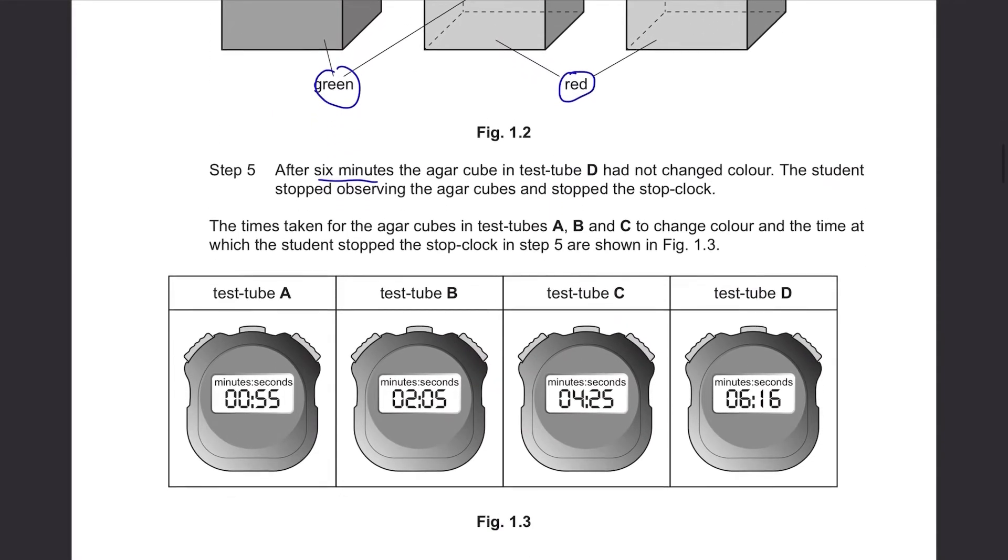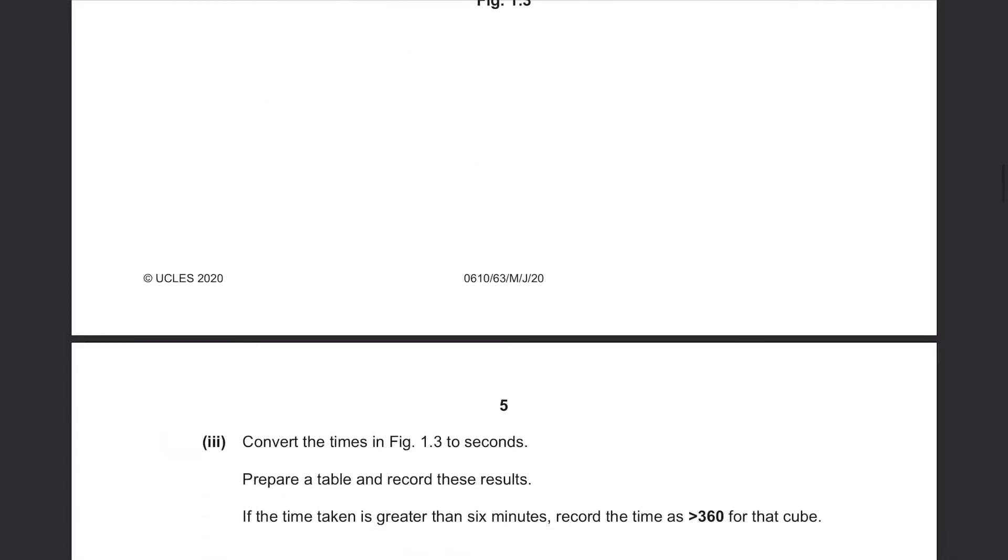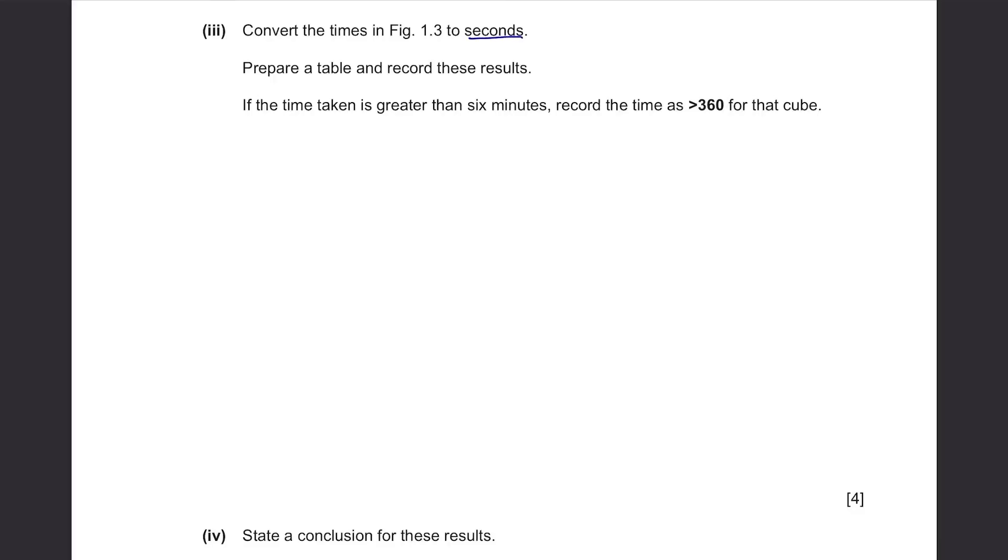The times taken for the agar cubes in test tubes A, B, and C to change color and the time at which the student stopped the stop clock in step 5 are shown in figure 1.3. They always show it in stop watch, so 55 seconds, 2 minutes 5 seconds, 4 minutes 25 seconds, and this one was 6 minutes 16 seconds. Convert the times in figure 1.3 to seconds. Prepare a table and record this result. If the time taken is greater than 6 minutes, record the time as greater than 360 for that cube.